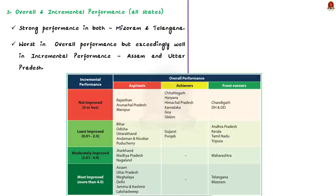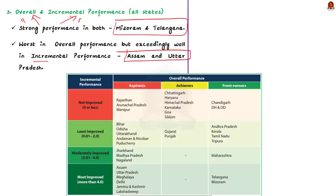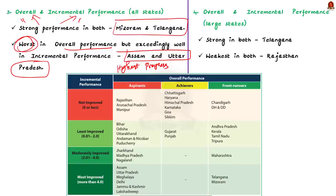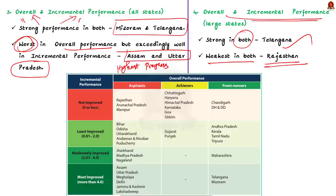The third finding: among all states, Mizoram and Telangana were the only two states that demonstrated strong overall performance and also showed the most improvements in incremental performance. Among all states, Jharkhand and Uttar Pradesh are in the bottom one-third in overall performance but performed exceedingly well in incremental performance, recording the highest progress. The fourth finding: among larger states, Telangana is the only state that demonstrated strong performance in both overall and incremental categories. On the other hand, Rajasthan was the weakest performer both in overall and incremental performance.